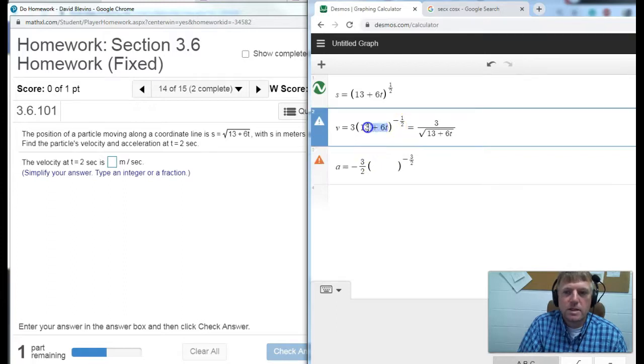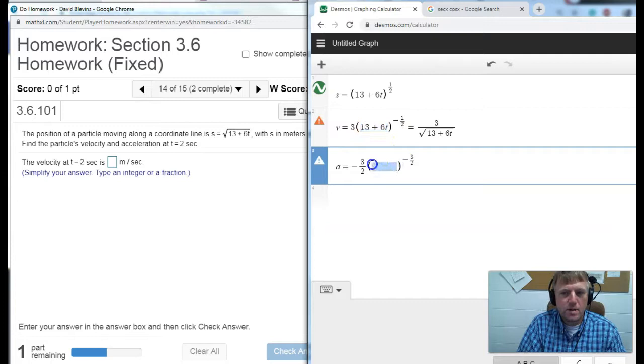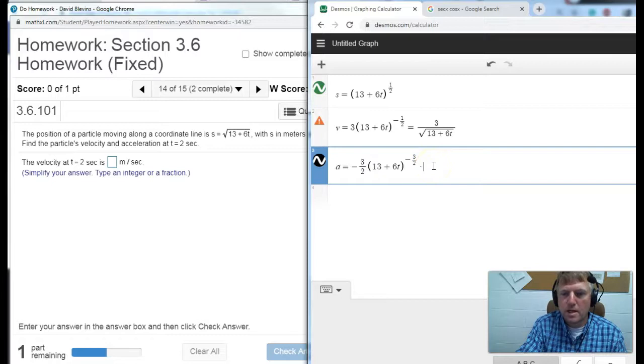And once again I need to leave the inside the same. And then I chain on the derivative of what was inside again. The derivative of what's inside just like it was the first time is just going to be the 6.